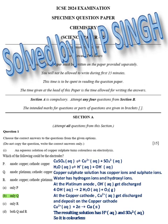Copper sulfate solution has copper ions and sulfate ions. Water has hydrogen ions and hydroxyl ions. At the platinum anode, hydroxyl ions get discharged. At the copper cathode, copper ions get discharged and deposit on the copper cathode. The resulting solution has hydrogen ions and sulfate ions, so it is colorless.